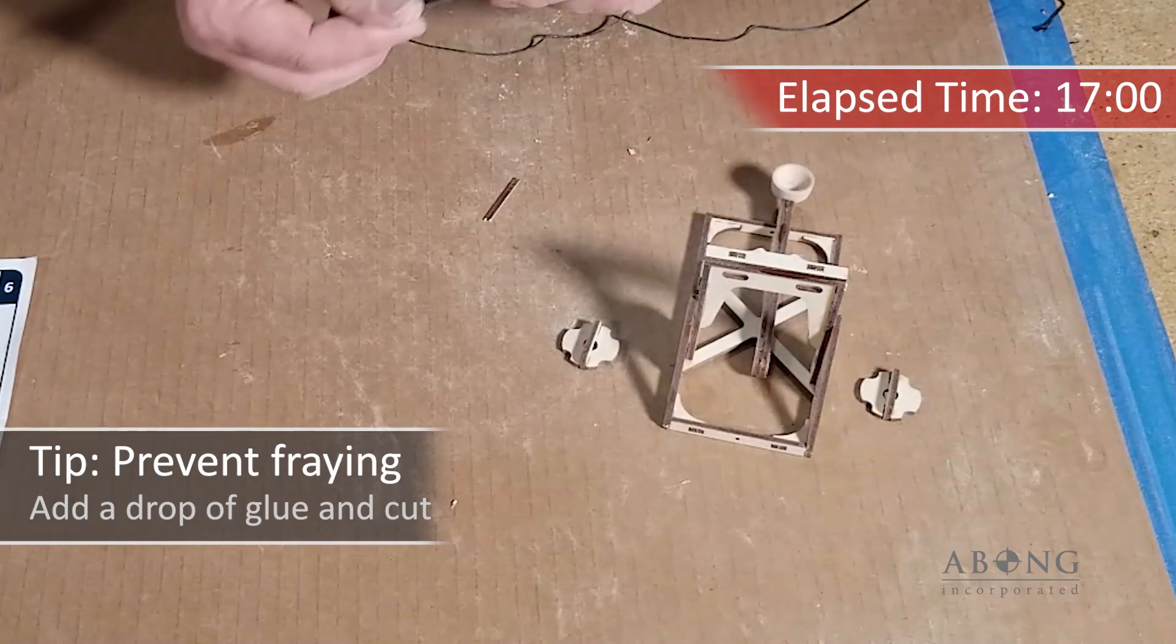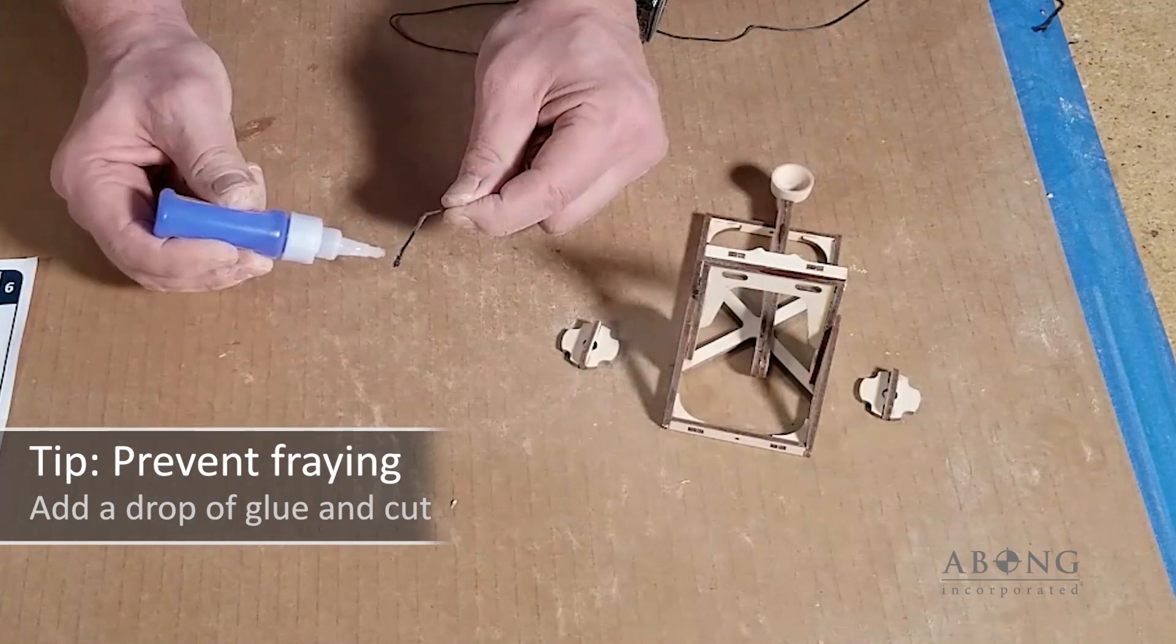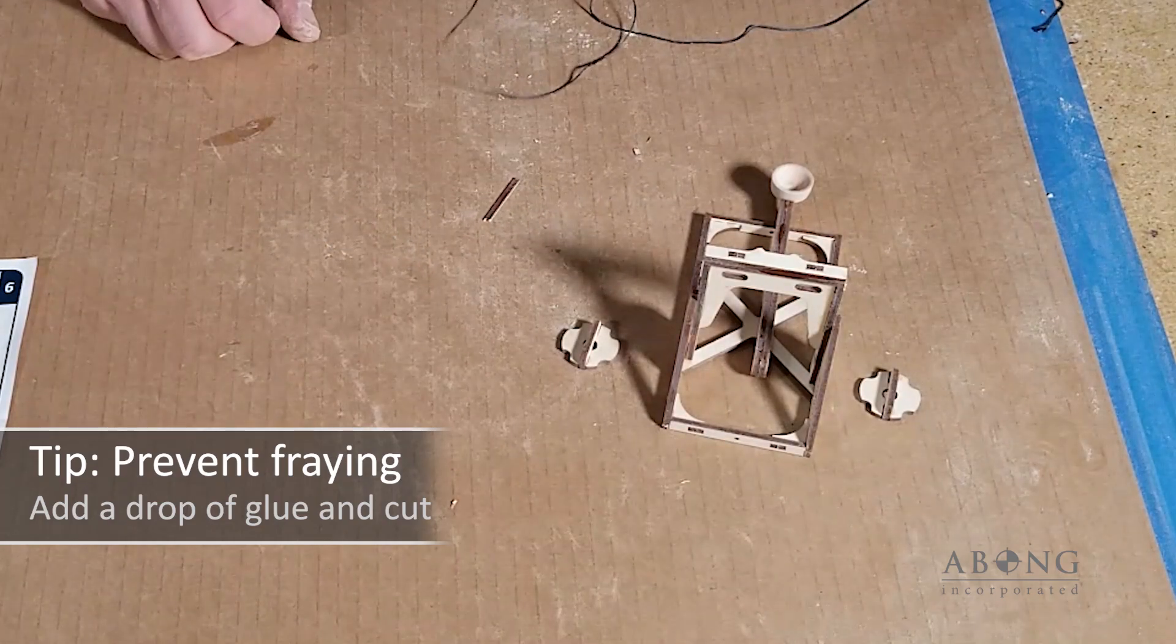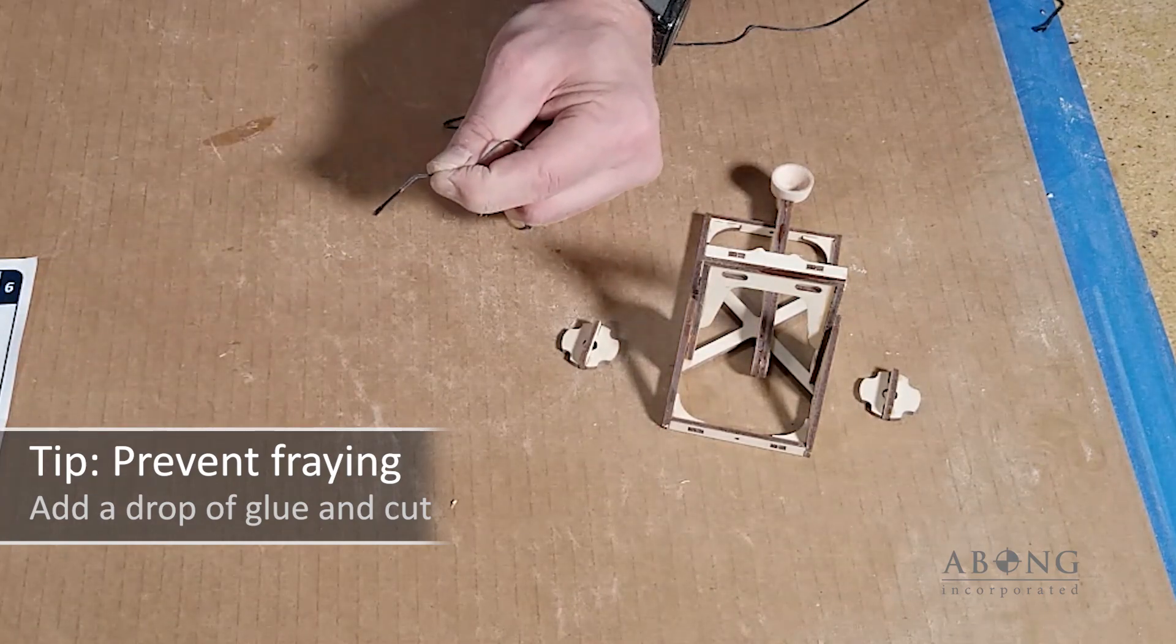So here I'm going to give you a little tip. To thread the cord it helps if you have no fraying on the end. And to get rid of that fraying you can just add a little bit of super glue and then snip off the end.